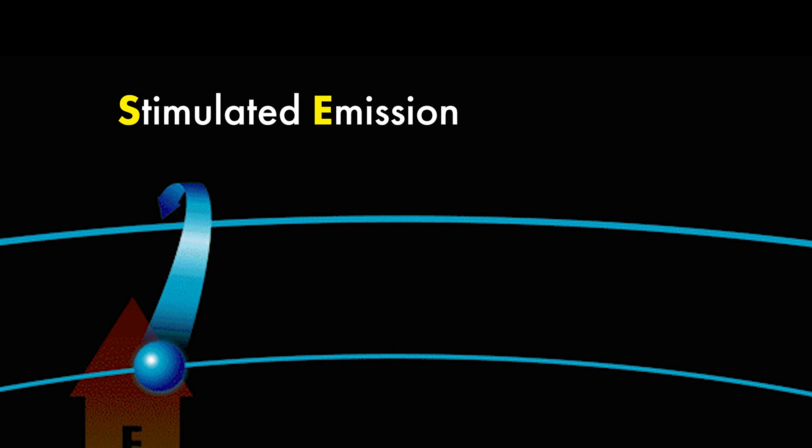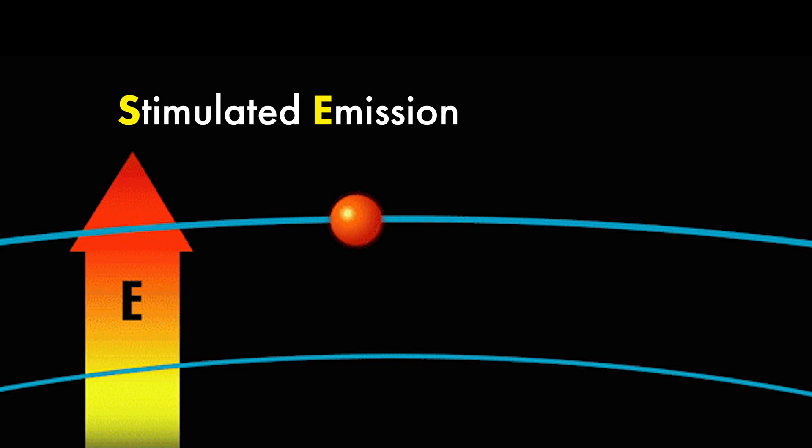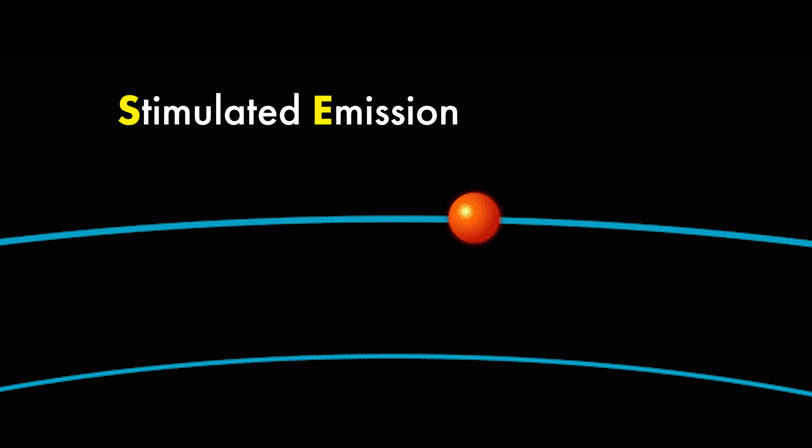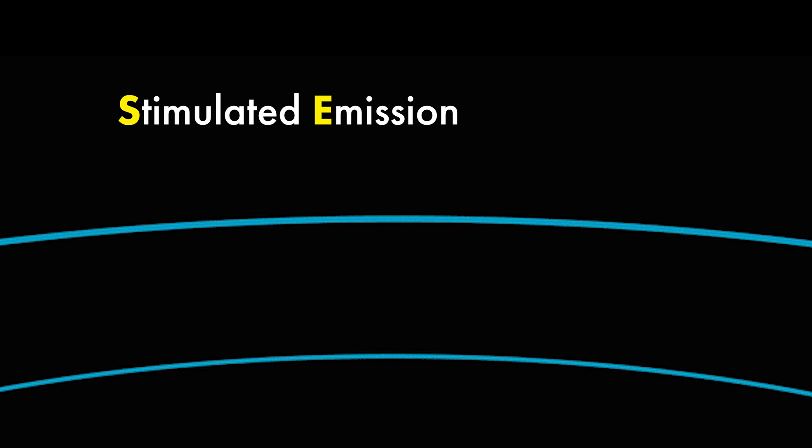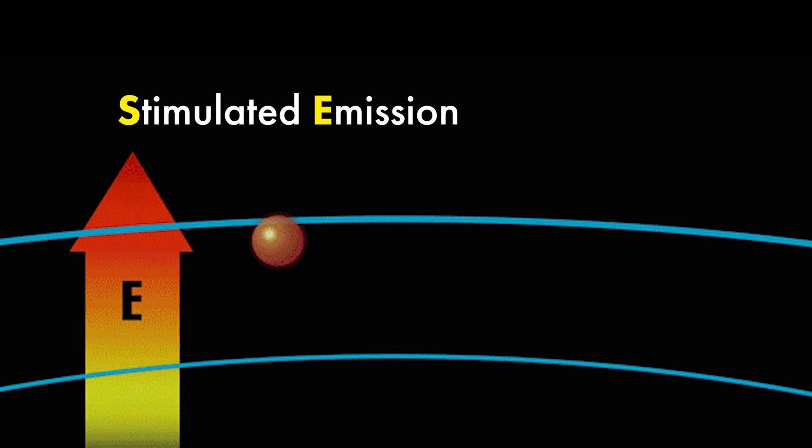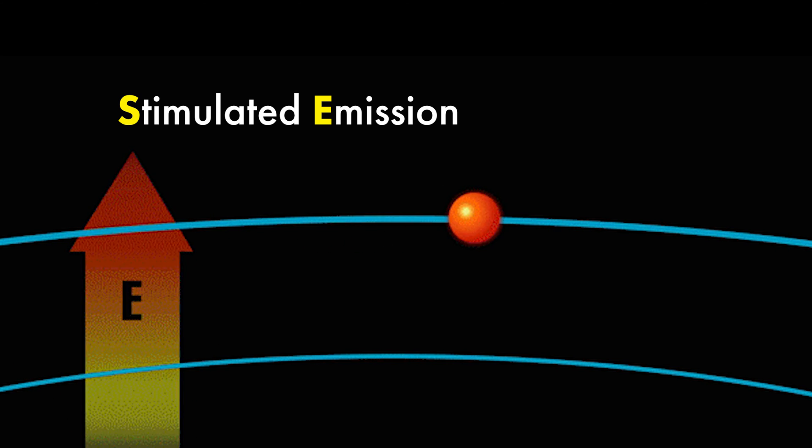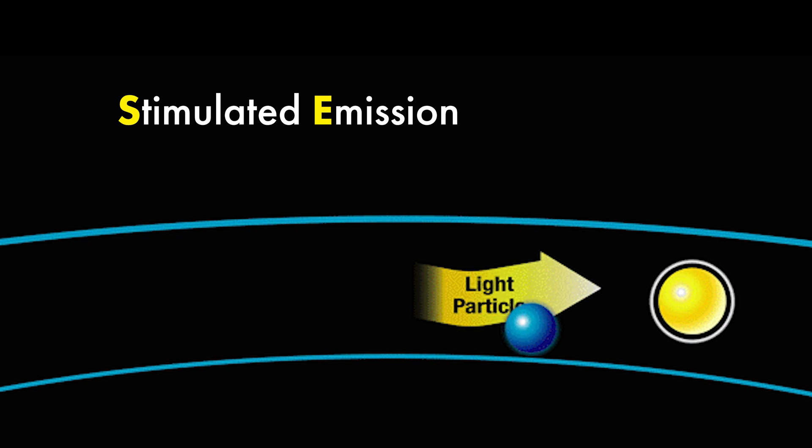Stimulated emission is a process that happens when a light particle, called a photon, hits an atom or a molecule that has extra energy. The photon makes the atom or molecule give up its extra energy and release another photon that has the same color, direction, and phase as the first one. This way, the light is amplified and becomes more intense and coherent.